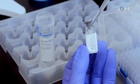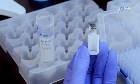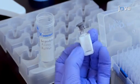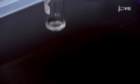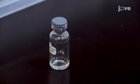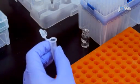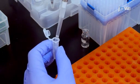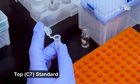For standard preparation, add 250 microliters of assay buffer to reconstitute the lyophilized mouse TH cytokine standard cocktail. Mix by briefly vortexing and allow the vial to sit at room temperature for 10 minutes. Transfer the standard cocktail to a polypropylene microcentrifuge tube labeled C7. This will be used as the top standard.